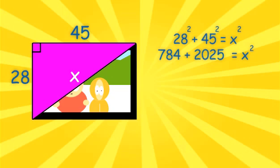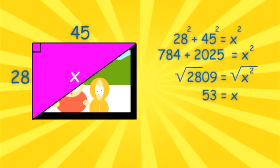28 squared is 784. 45 squared is 2,025. 784 plus 2,025 equals 2,809. Now we can square root both sides of the equation, and X equals 53. Now John can advertise his 53-inch TV on Craigslist.